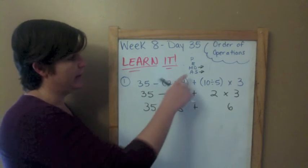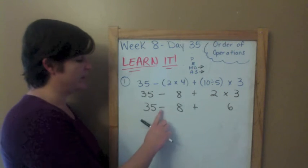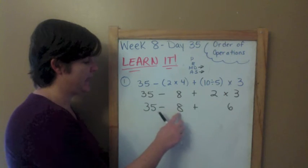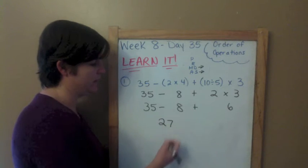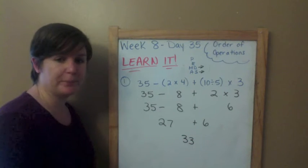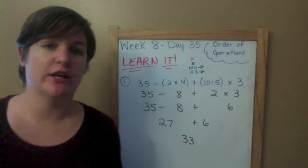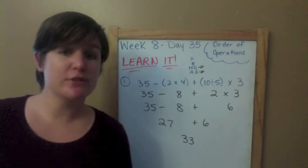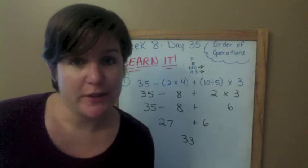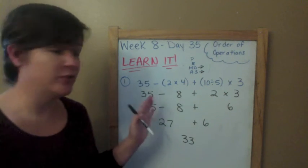Bring everything else down: 35 minus 8 plus 6. Now we have addition and subtraction, but these two are on the same playing field, so we go from left to right. I've got subtraction then addition, so starting left to right: 35 minus 8 is 27, plus 6. And 27 plus 6 is 33. One word of advice: do not do this all in your head — you'll make a mistake. I've tutored a lot of students who think they can do this in their head, and I catch them in mistakes over and over. Show some dedication and truly write it out step by step — it'll really help you.